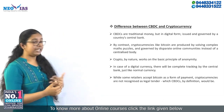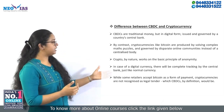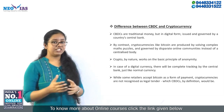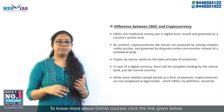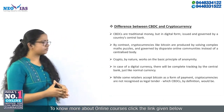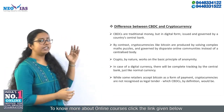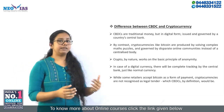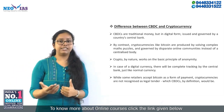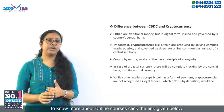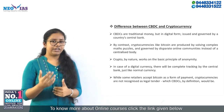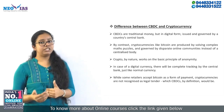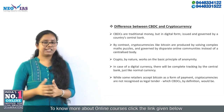As against that, with digital currency there will be complete tracking by the central bank, just as in the case of normal currency. In the case of CBDC — that is central bank digital currency — it is by definition a legal tender money. But Bitcoin or other cryptocurrencies are not legal tender money, and hence retailers might or might not accept such currencies.